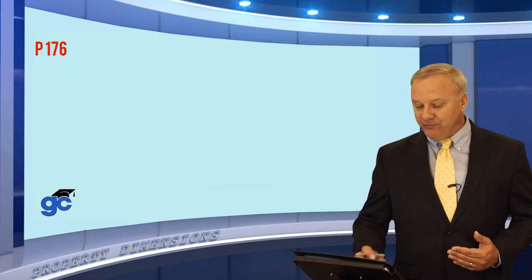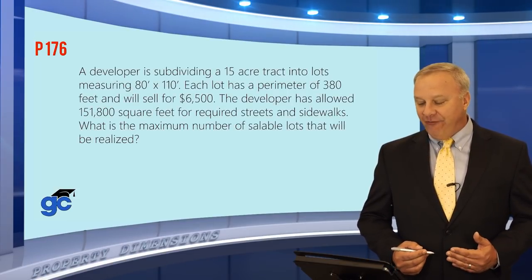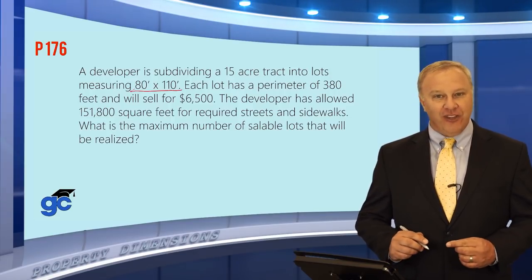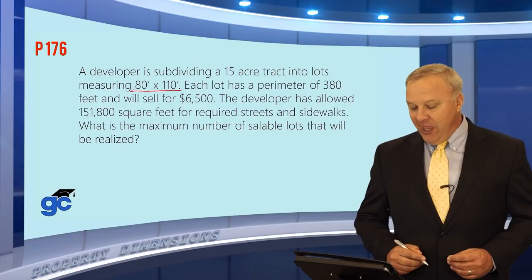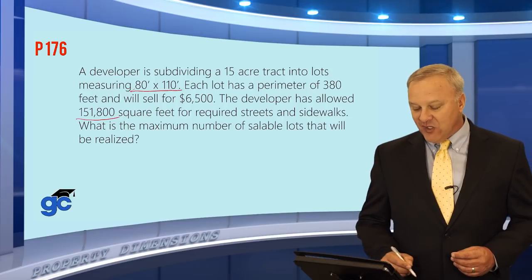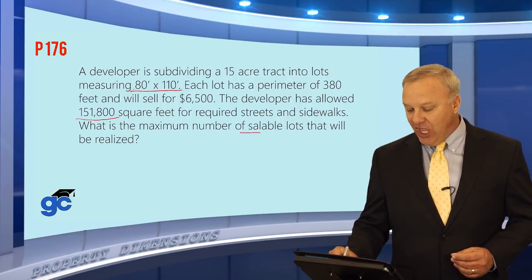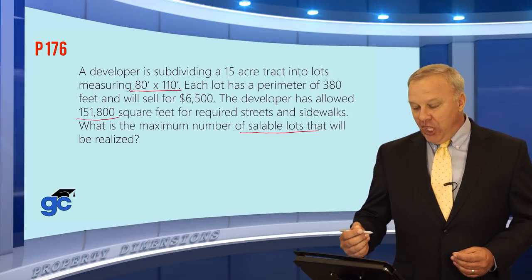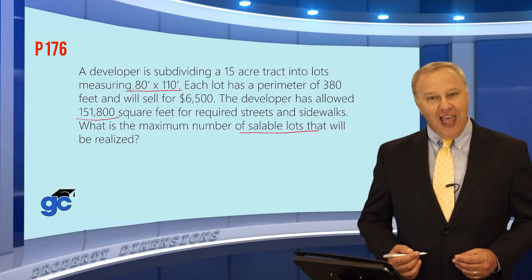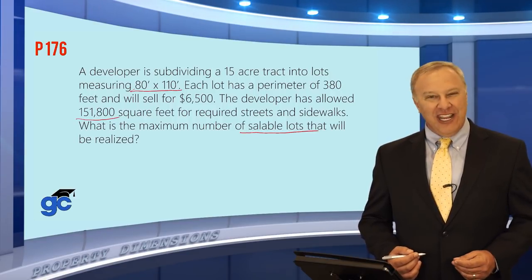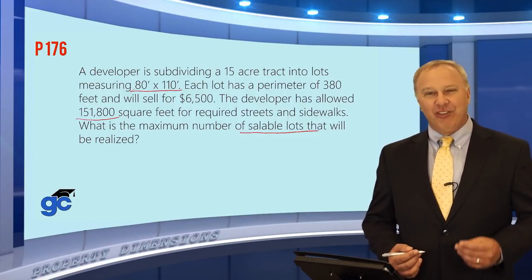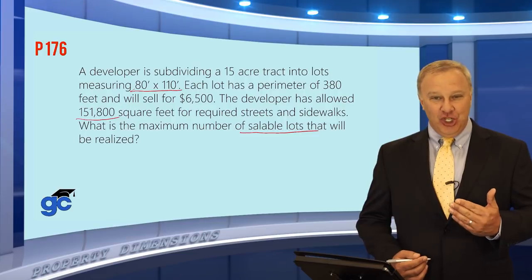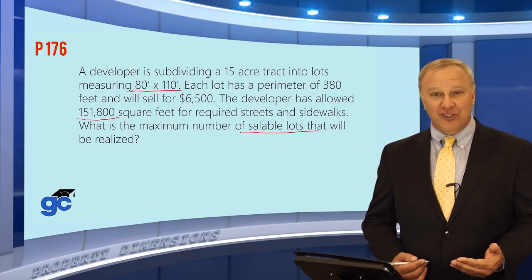Next question: a developer is subdividing a 15-acre tract into lots measuring 80 × 110 feet. Each lot has a perimeter of 380 feet and will sell for $6,500. The developer has allowed 151,800 square feet for streets and sidewalks. The question asks for the maximum number of saleable lots. Note: the perimeter of 380 feet and the sale price are extraneous — not every number in a question needs to be used in your calculation.